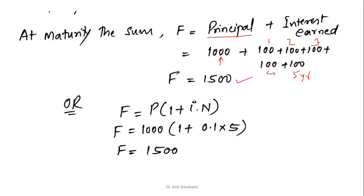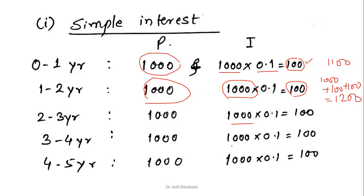Instead of using all this step-by-step calculation, I can use the simple formula F = P × (1 + i × N). With i = 0.1, N = 5 years, and P = 1000, I directly get Rs. 1500. So whatever I showed you step by step is how simple interest is calculated, but in future you should use this equation only.